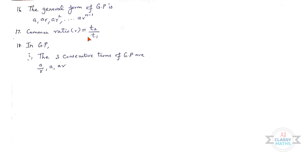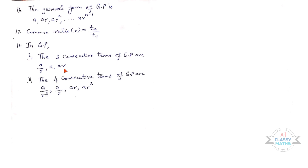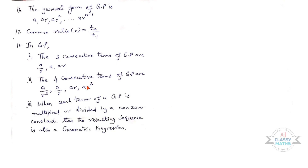Eighteenth one: In a GP, the three consecutive terms are a/r, a, ar. The four consecutive terms of a GP are a/r³, a/r, ar, ar³. When each term of a GP is multiplied or divided by a non-zero constant, the resulting sequence is also a geometric progression.